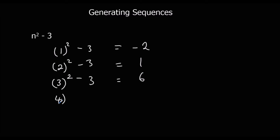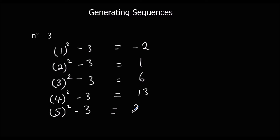4 squared minus 3: 16 minus 3 is 13. And 5 squared minus 3: 5 squared is 25, minus 3 is 22. So the first five terms of this sequence are minus 2, 1, 6, 13, and 22.